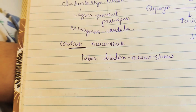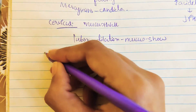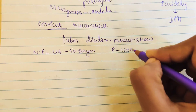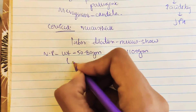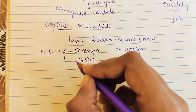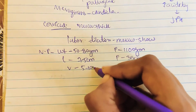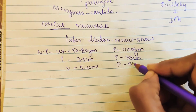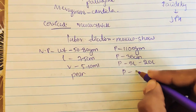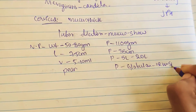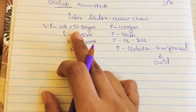For uterine changes: in a non-pregnant female, the weight of the uterus is 50 to 80 grams, while in a pregnant female it is about 1100 grams — a marked hypertrophy with limited hyperplasia. The length goes from 7.5 centimeters to 35 centimeters, and volume increases from 5 to 10 milliliters to 5 to 20 liters. The shape changes from pear-shaped to globular at first, then spherical at 12 weeks.